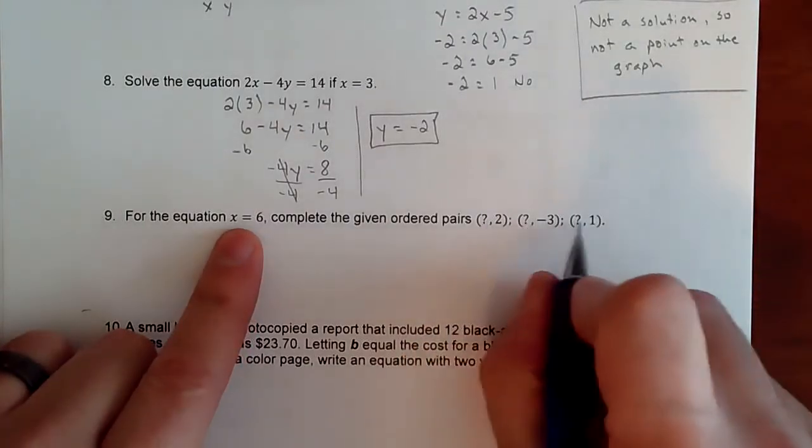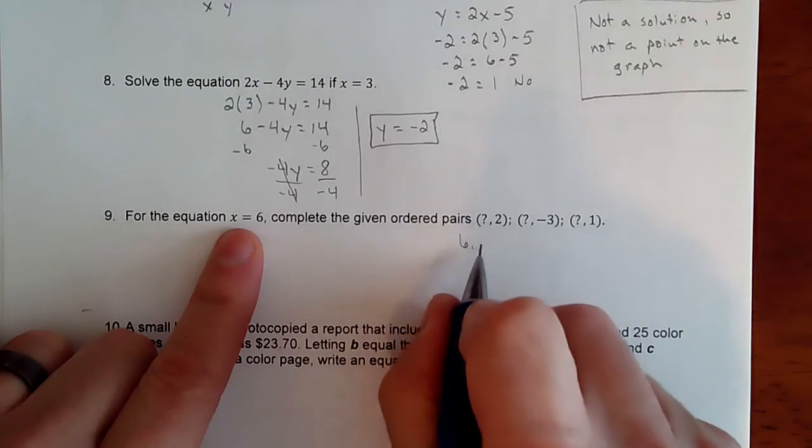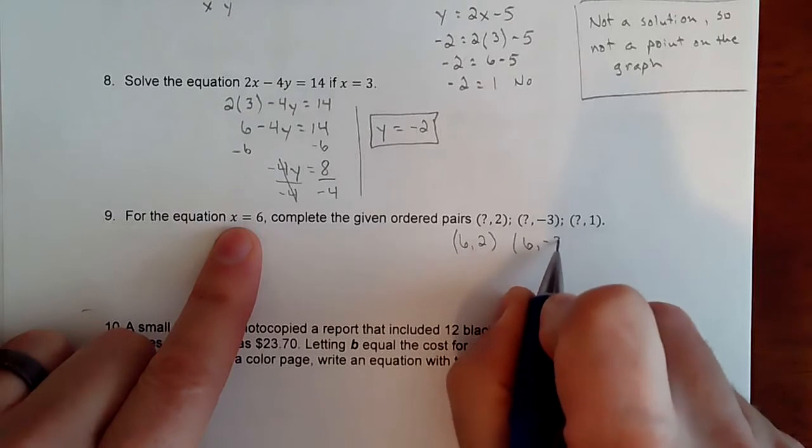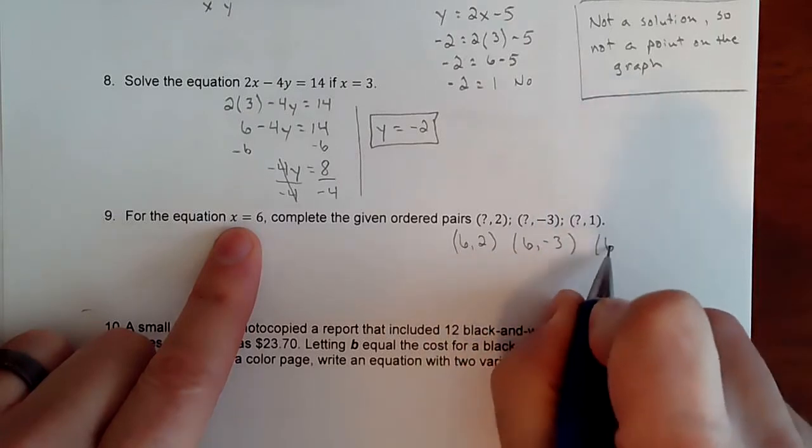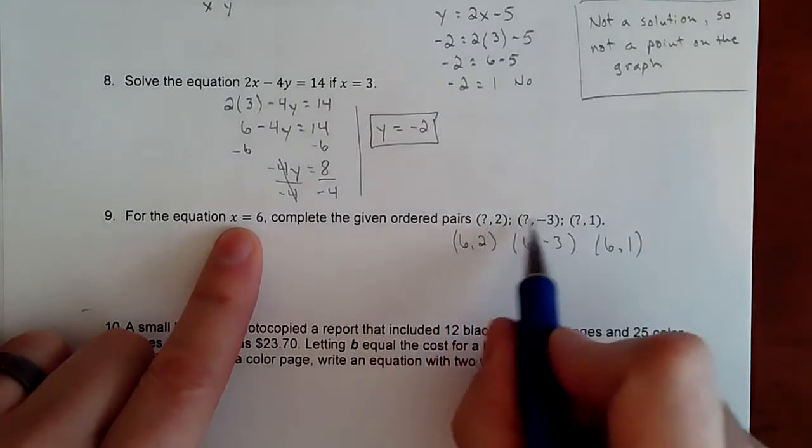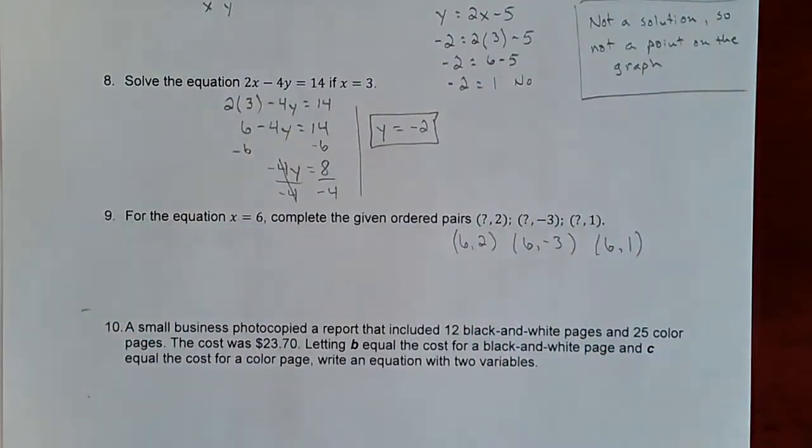So these question marks on the x's, all that just means is that they have to be 6's. The y's can be anything. That's it. So 6, 2, 6, negative 3, 6, 1. No correlation whatsoever.